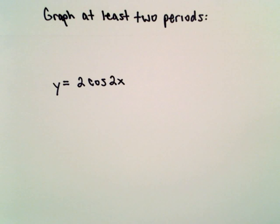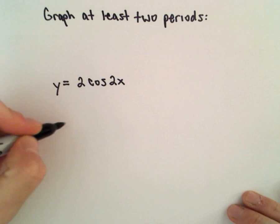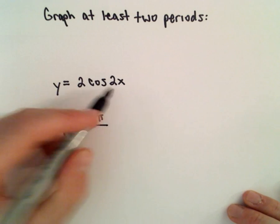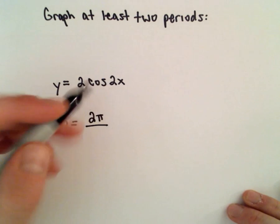We're going to graph two periods of y equals 2 times cosine of 2x. The first thing I'm going to do is find the period. So we'll take 2π and divide that by the absolute value of b.